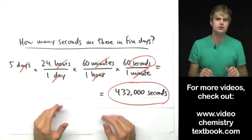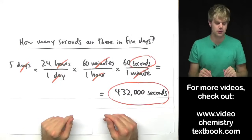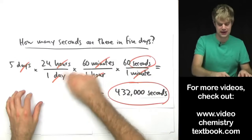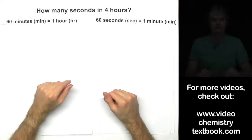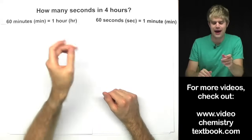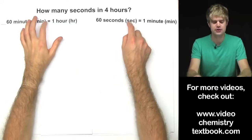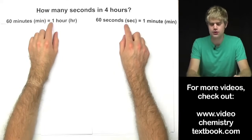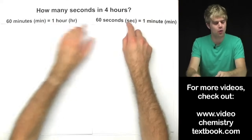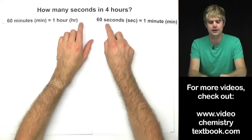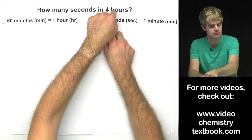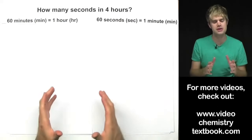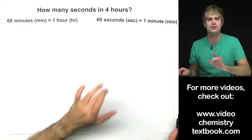Here we're going to do unit conversions with multiple steps, where we've got to take a bunch of conversion factors and put them together in a row, canceling a whole bunch of units to get to a final answer. Here we've got to find out how many seconds there are in four hours. There's no one relationship that lets us go directly from seconds to hours — instead, we have minutes-to-hours and seconds-to-minutes, so we've got to attack this problem in multiple steps.